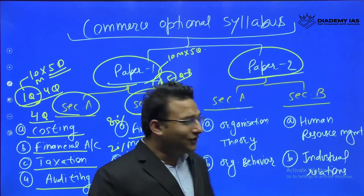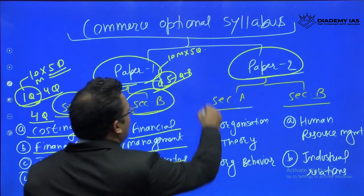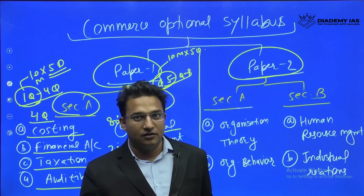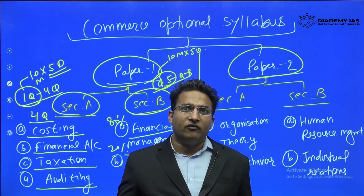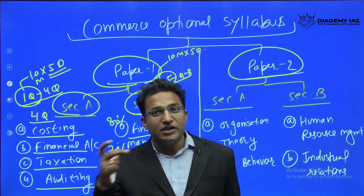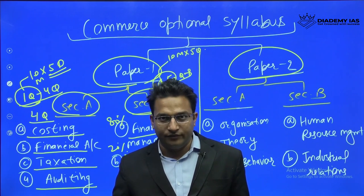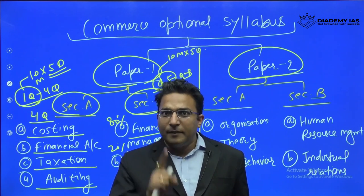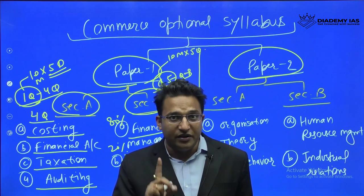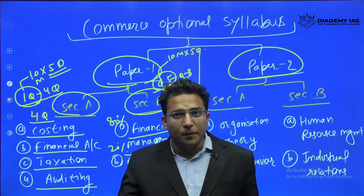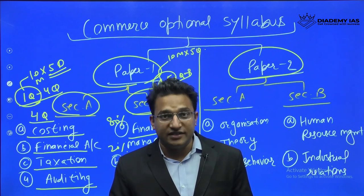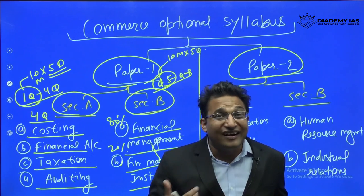Now coming to Paper 2. A common question is: if I am a BCom student, will I be at a disadvantage compared to a CA student? The answer is no — the level required here is whatever is covered in BCom. For CA students, CA Intermediate level is sufficient; there is no need to go to CA Final level. The syllabus is maximum CA Intermediate level and even then it covers only selected topics — for example, in Auditing only three or four topics are covered.